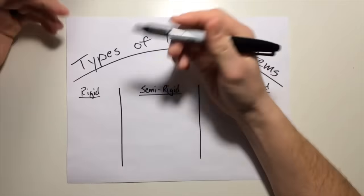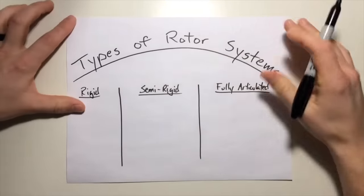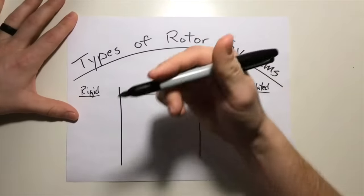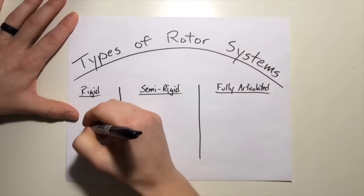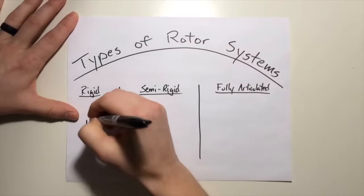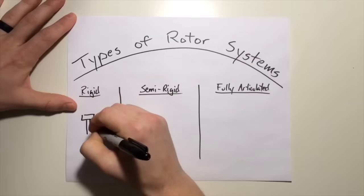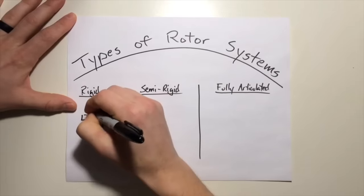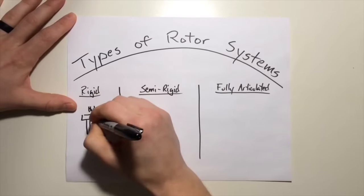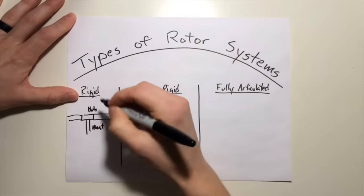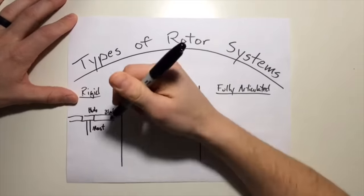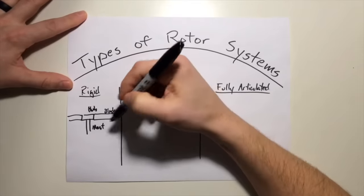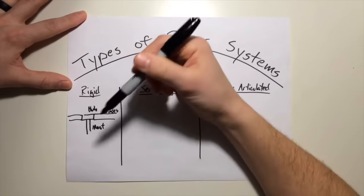Now in the beginning of modern day helicopters the first few designs had rigid rotor systems. These were simple in design and quite literally rigid when it came to the blades, the hub, and the mast. We have the mast attached to the hub and quite simply the blades just coming off of that. Very simple system. The only motion was just the rotation of the blades and the feathering of the blades.